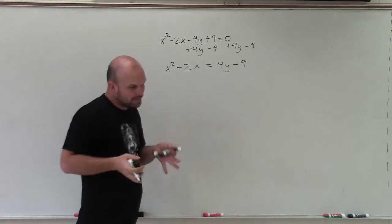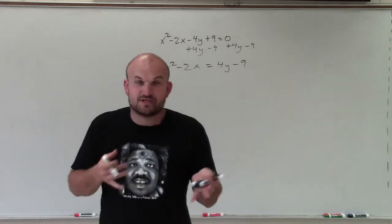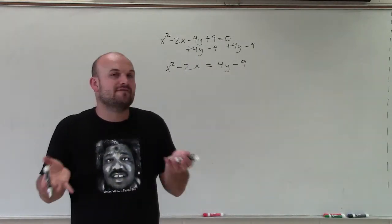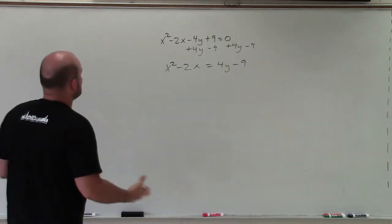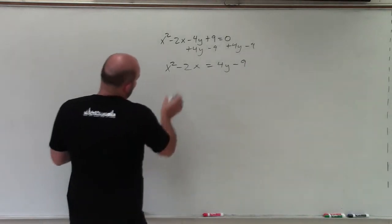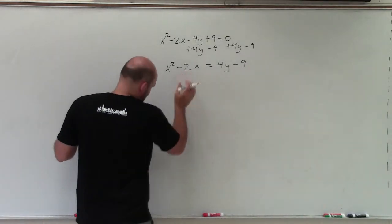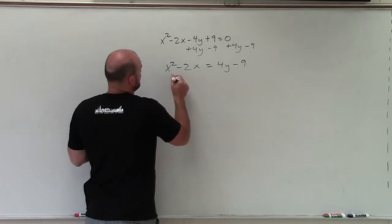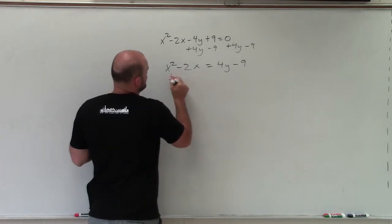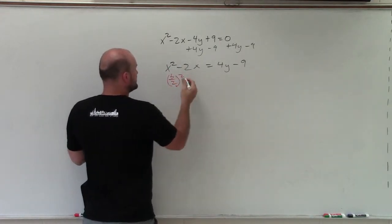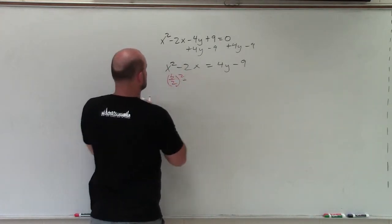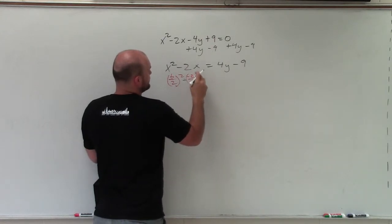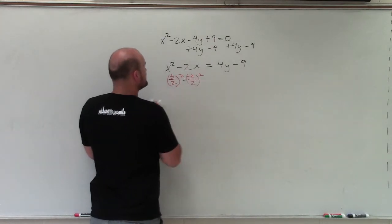Now remember, when we're looking for a standard form — especially for parabolas and conic sections — we want to have a binomial squared. So to obtain our binomial squared, we have to complete the square. To complete the square, we have to take b divided by 2 and square it, which in this case is negative 2 divided by 2, squared.